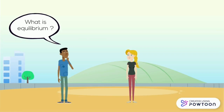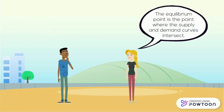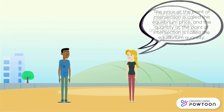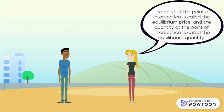What is equilibrium? The equilibrium point is the point where the supply and demand curves intersect. The price at the point of intersection is called the equilibrium price, and the quantity at the point of intersection is called the equilibrium quantity.